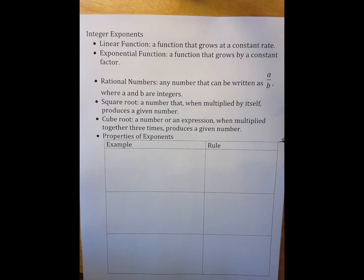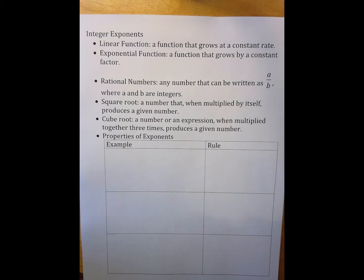A rational number is any number that can be written as a over b, where a and b are integers. Integers are the numbers on a number line: negative 3, negative 2, negative 1, 0, 1, 2, 3, and so on in both directions. A square root is a number that when multiplied by itself produces a given number. A cube root is a number or expression that when multiplied together 3 times produces a given number.